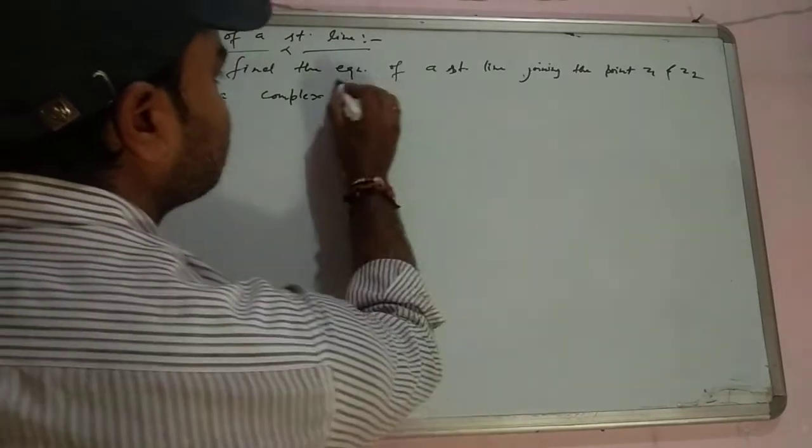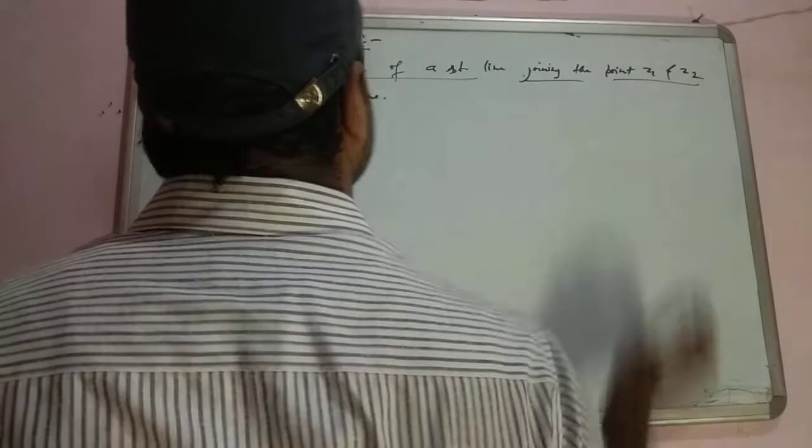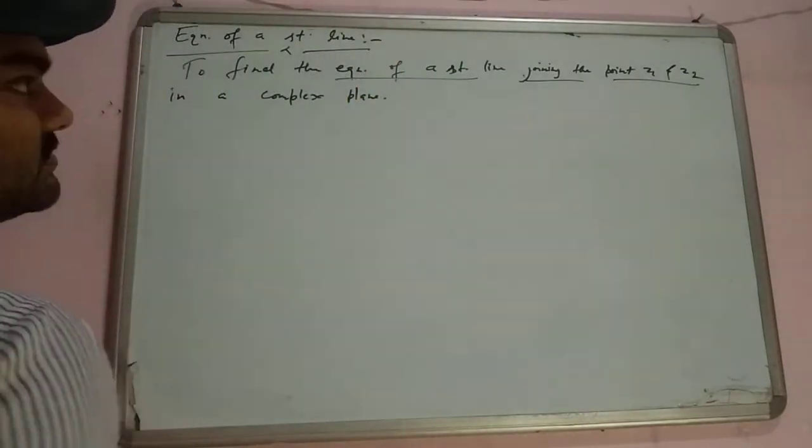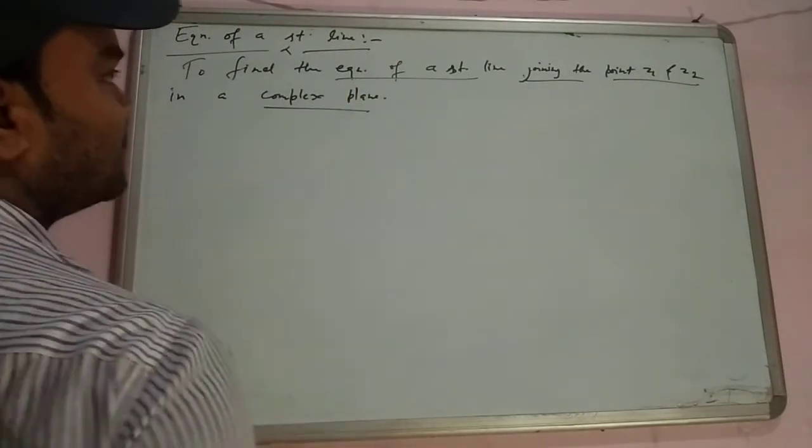We find the equation of a straight line joining two points in a complex plane.